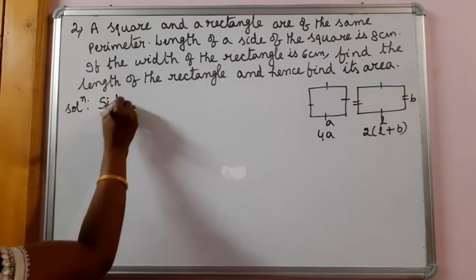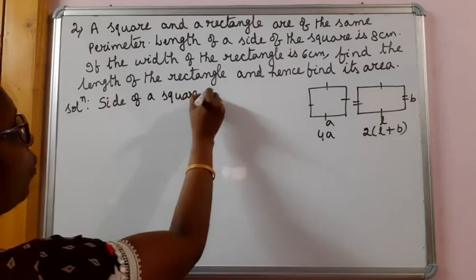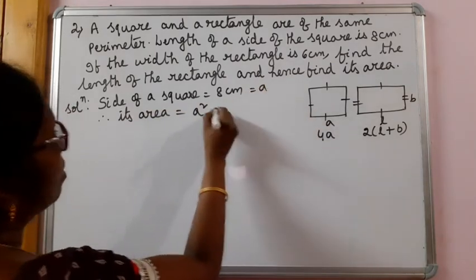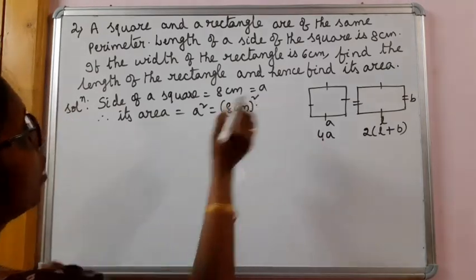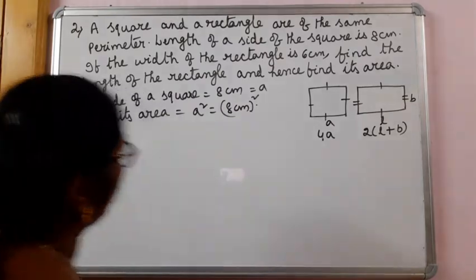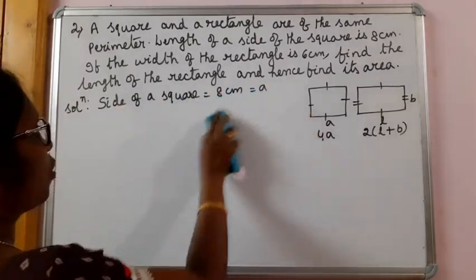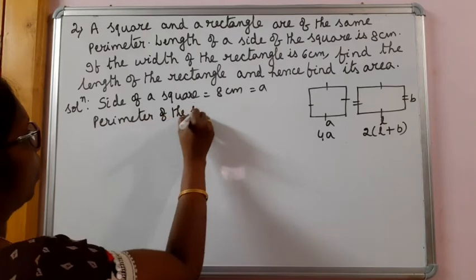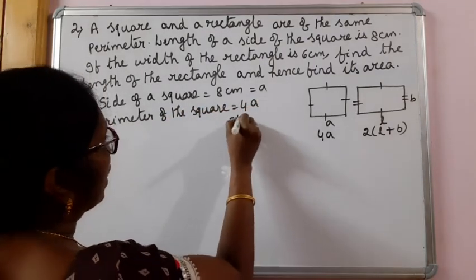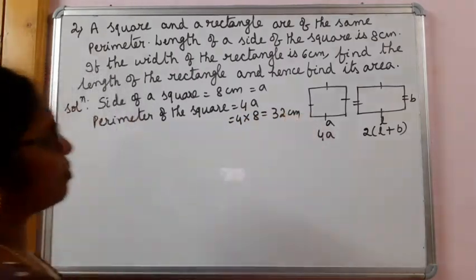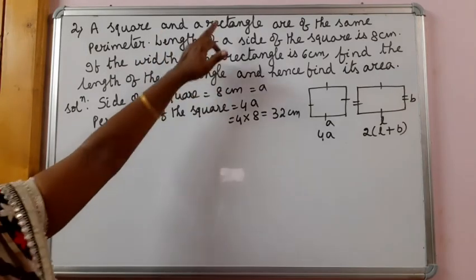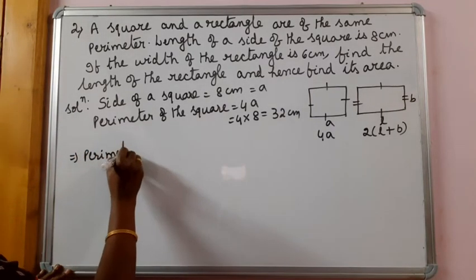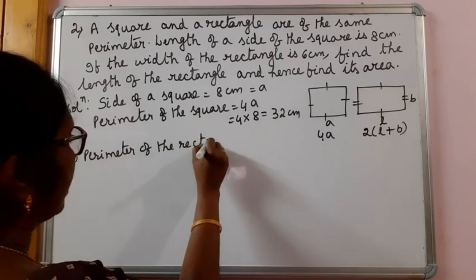So let us start. What is given — side of the square is equal to 8 cm. Perimeters are the same, so we have to find the perimeter of the square. Perimeter of the square is equal to 4 into side, or 4A, that gives 4 into 8, which is 32 cm. And in the question it is given that the perimeter of the square and perimeter of the rectangle are the same, which implies the perimeter of the rectangle is 32 cm itself.